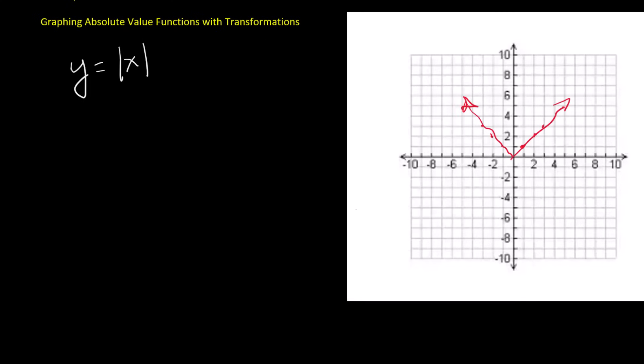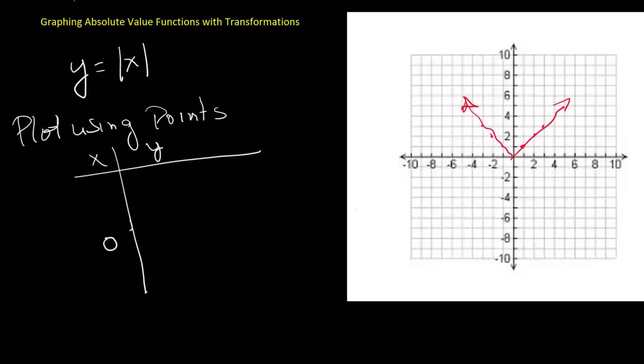This is a graph shaped like the letter V pointing upward. To plot it, place the vertex at 0. Then choose two points to the right and two points to the left. The absolute value of negative 2 is 2, and the absolute value of negative 1 is 1.